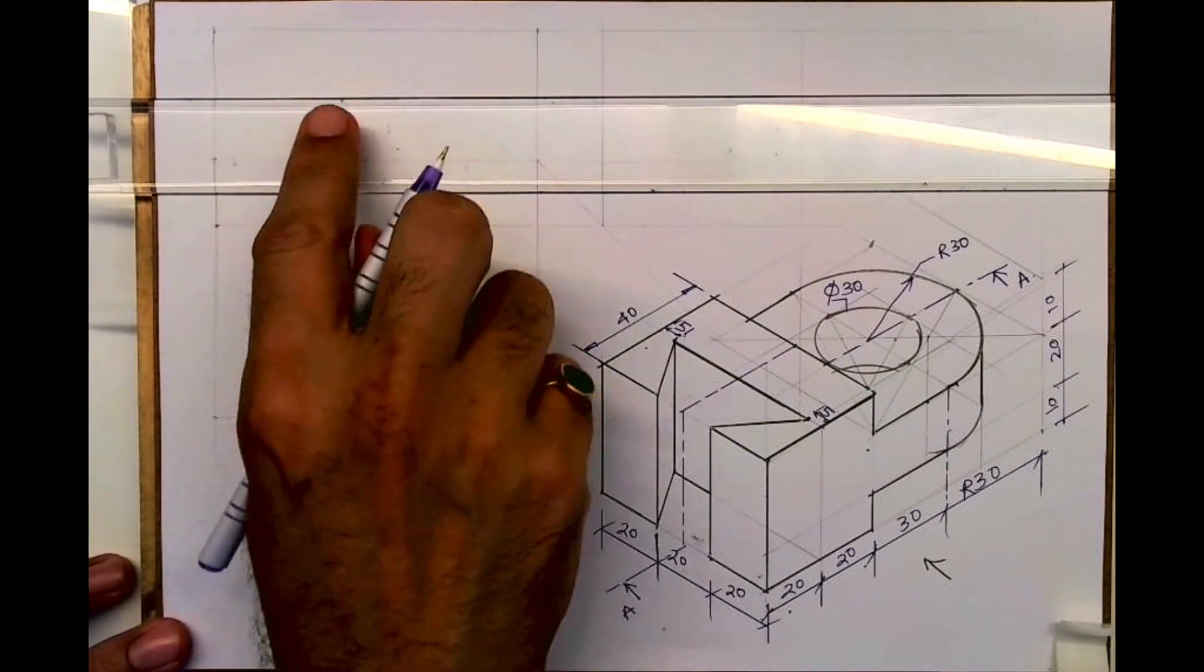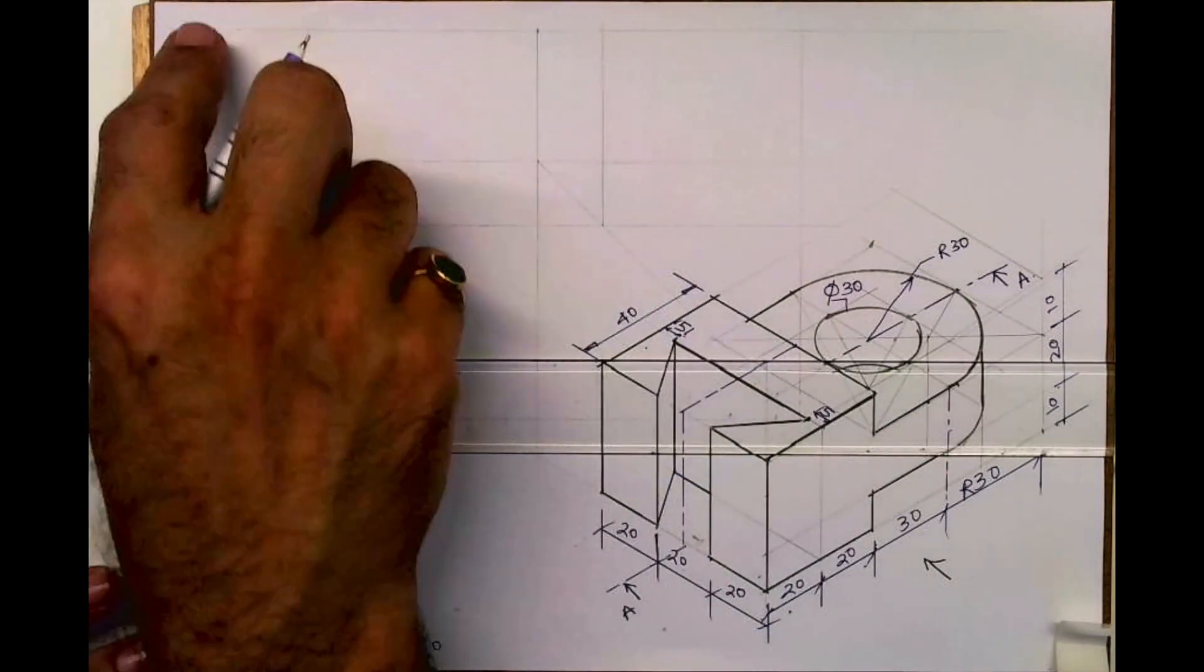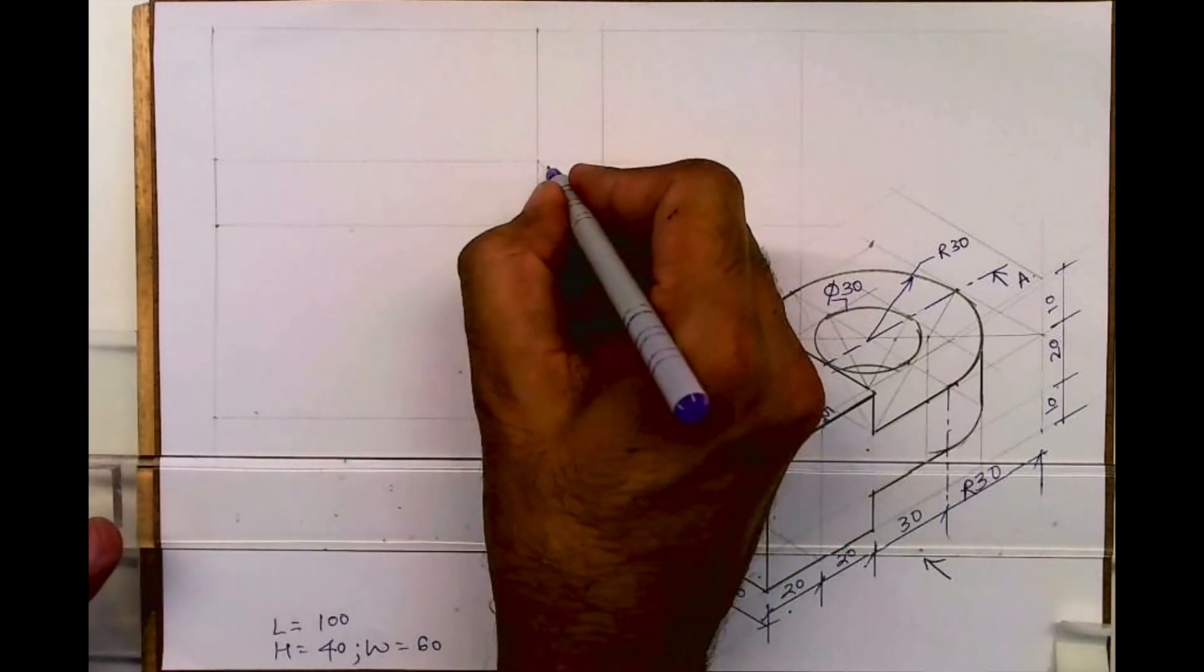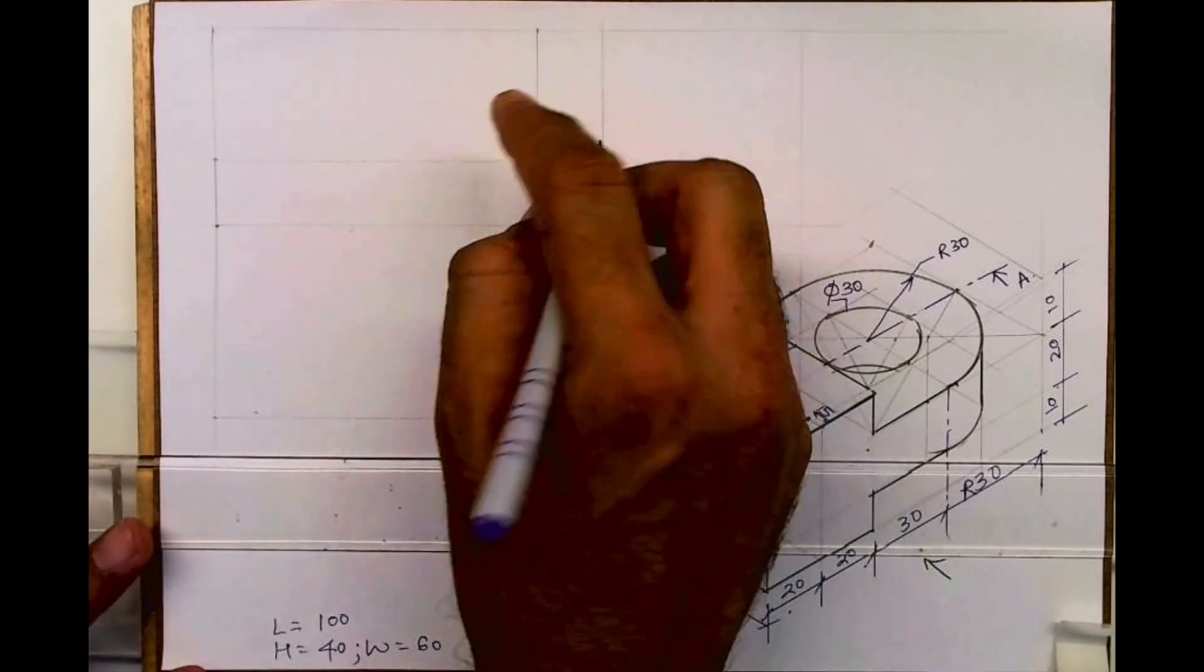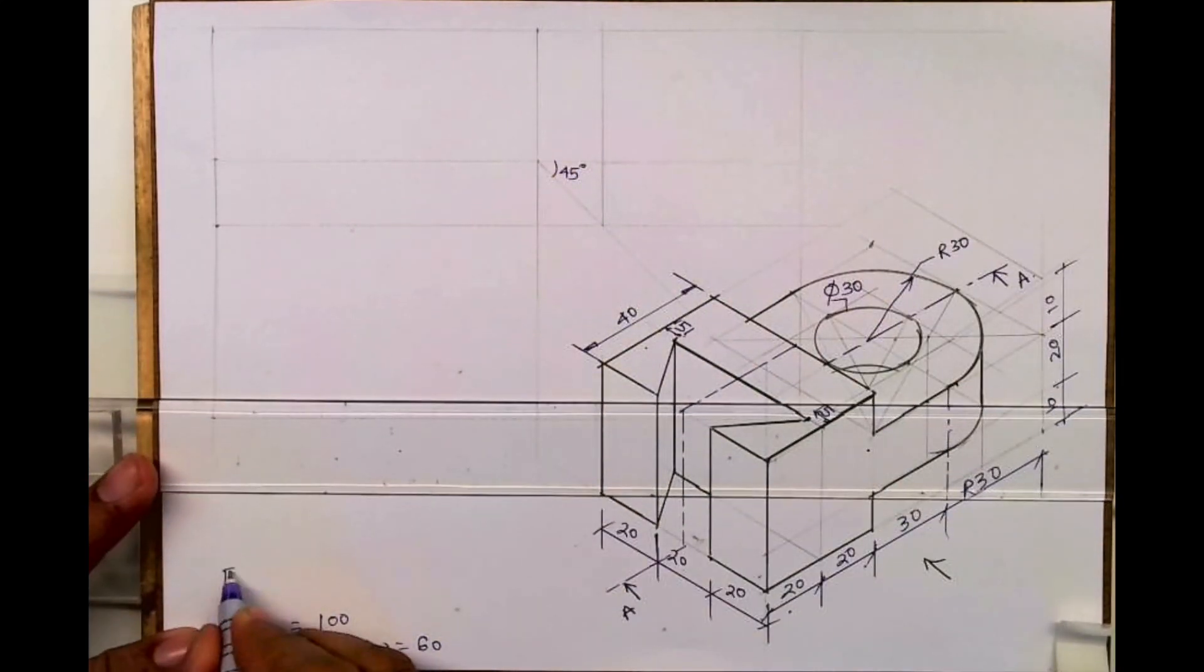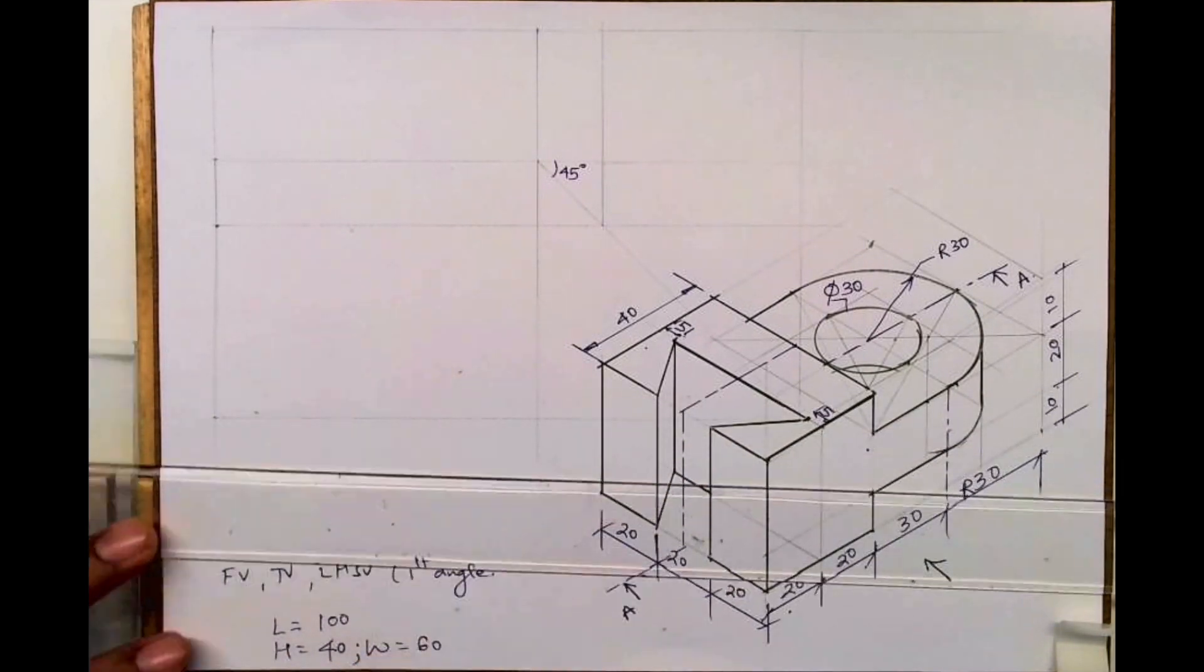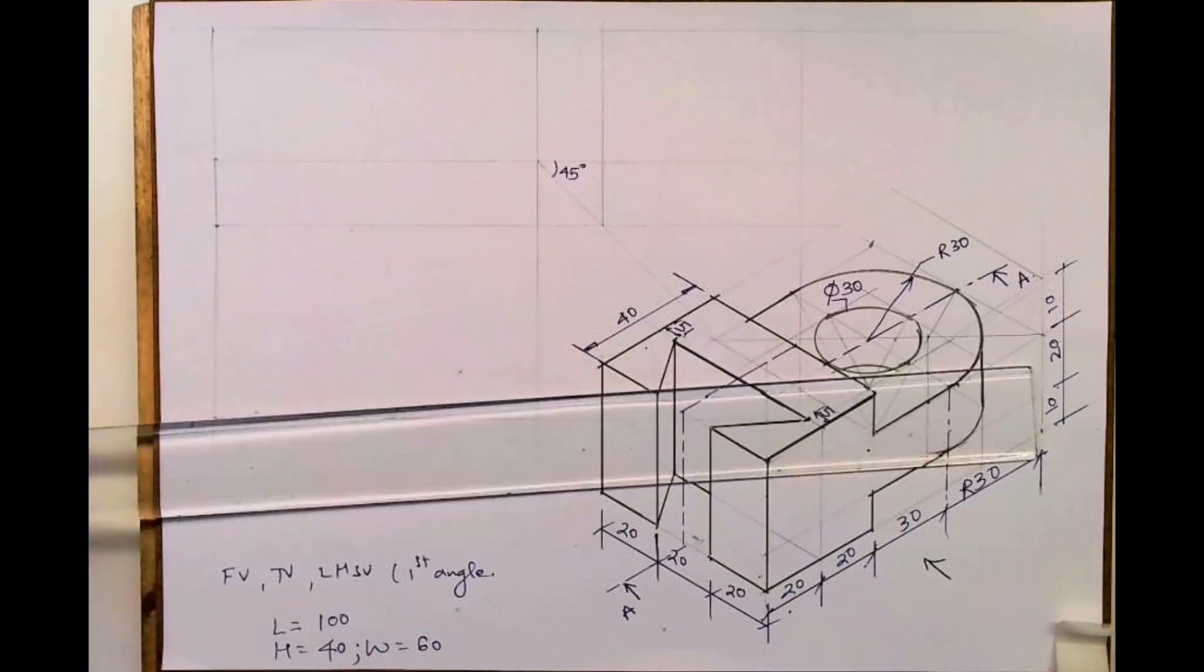So what we need to do first, we need to draw layout front view length and height, top view length and width. Then we'll draw 45 degree and we'll draw side view. So front view, top view, and left hand side view we need to draw first angle.